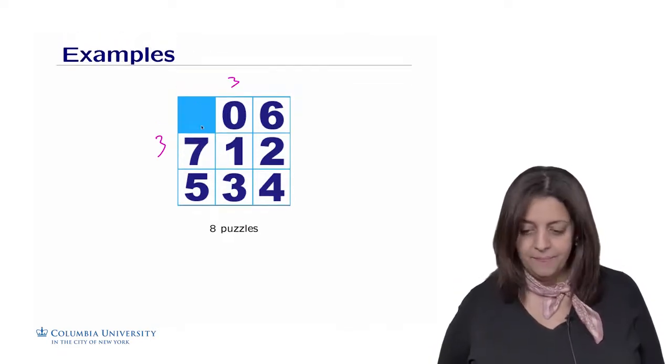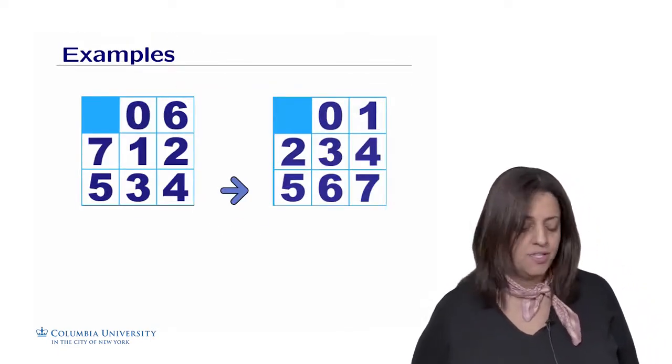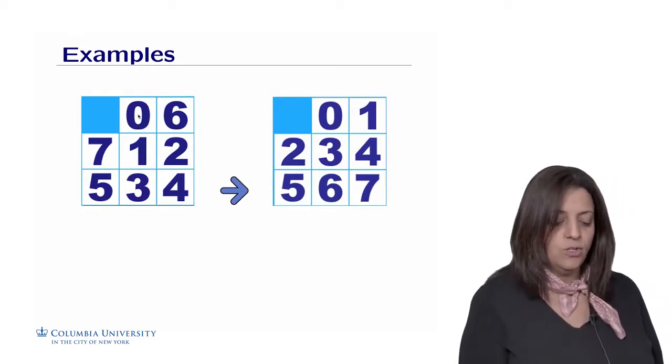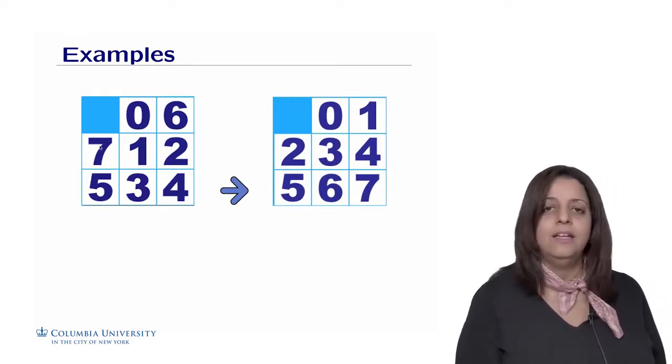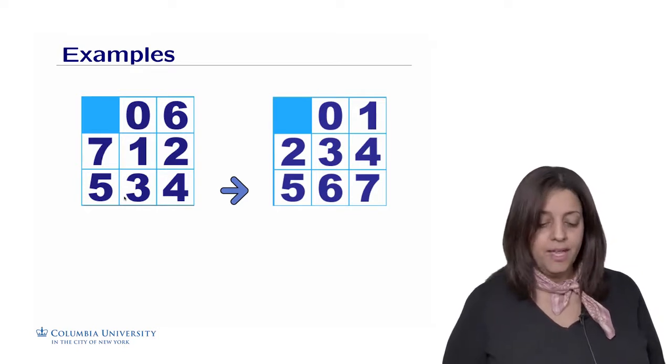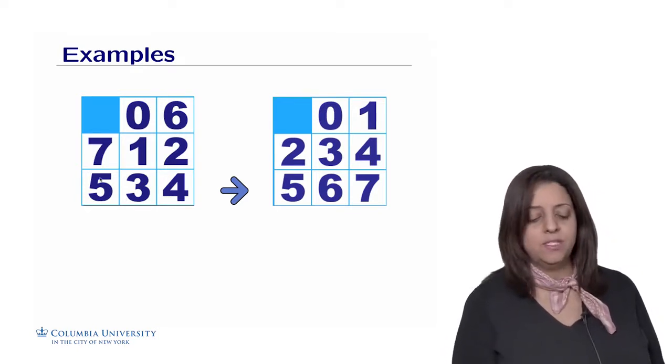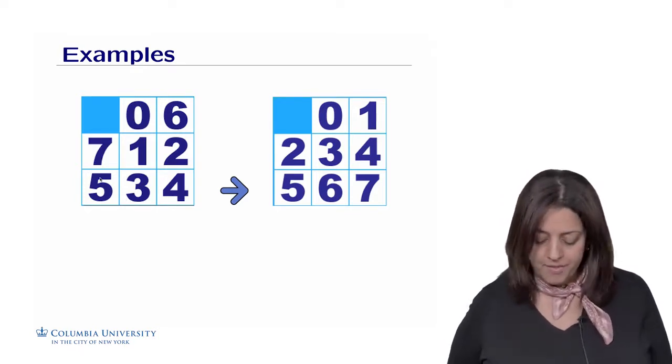So here's a possibility. For example, we could start with this first board on the left that has actually the numbers 0 to 7, not in order. And you want to be able to move the squares around until we reach the goal.